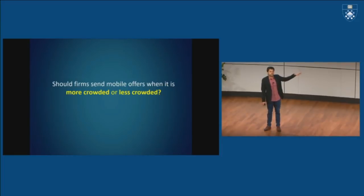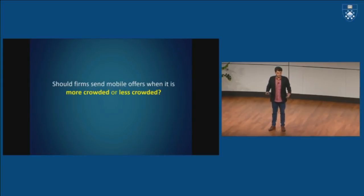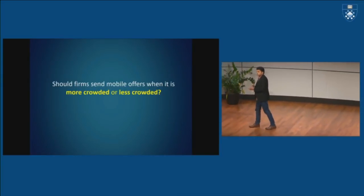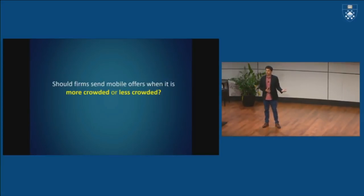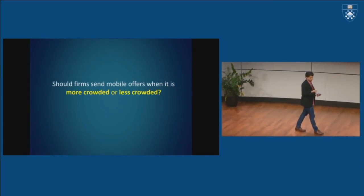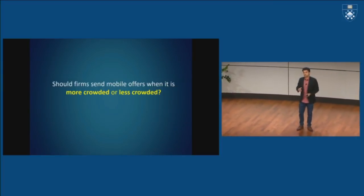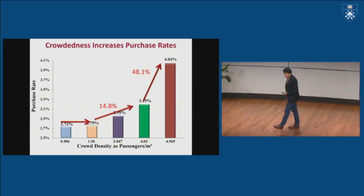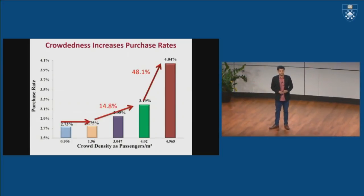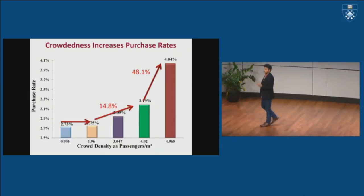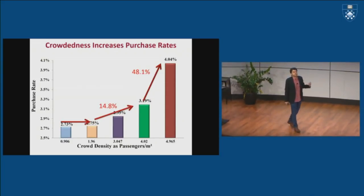And we ran a number of field experiments to investigate this phenomena. We worked with different brands, leveraged the variation in crowdedness across peak hours and off-peak hours across 14 different cities to investigate how does crowdedness affect people's propensity to respond to mobile offers. So here's what we found. As the level of crowdedness increases from one person per square meter to two to three to four to five, the propensity for people to respond positively to mobile offers kept increasing.